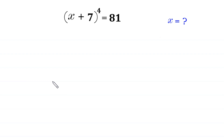Hello. Welcome to how to solve this very nice algebra equation: x plus 7, whole to the power 4, equal to 81. We need to find all possible values of x.